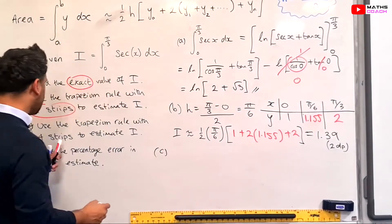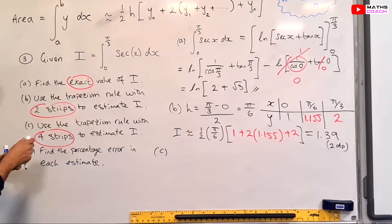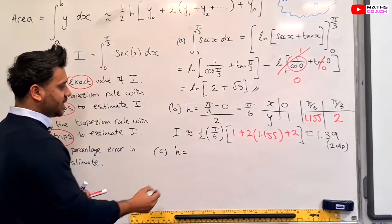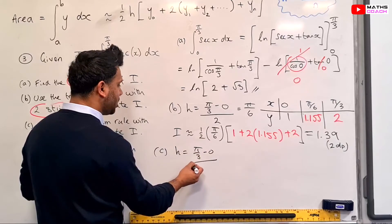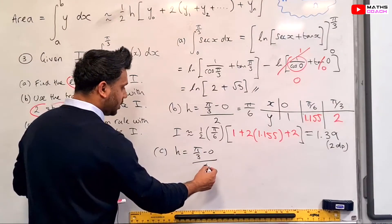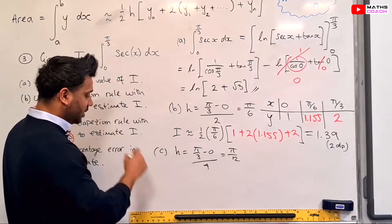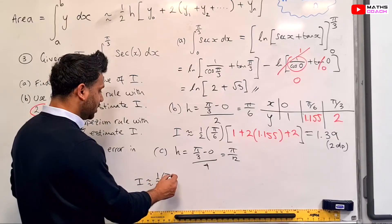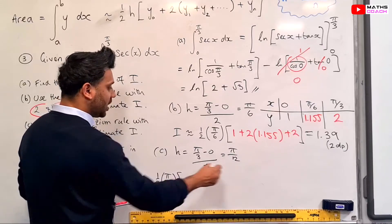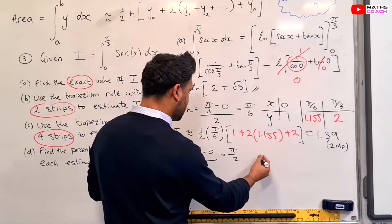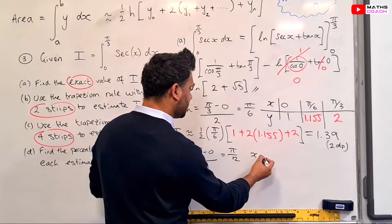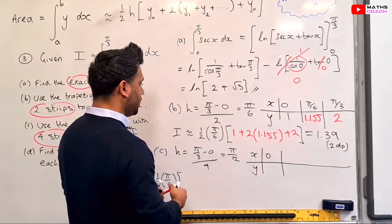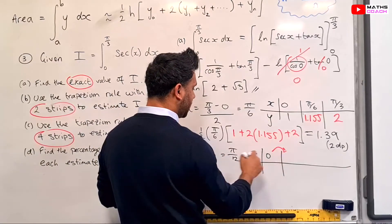Now let's look at part c. We also use four strips to do another estimation for our integration. We have to work out the new h value: it will be pi by 3 take away 0, but this time we're dividing by 4. This gives us pi by 12. So our I is approximately equal to a half of h, which is pi by 12, times all the y values added together. We need to set up a table of values again, with the first x value being 0, and adding on pi by 12 each time.